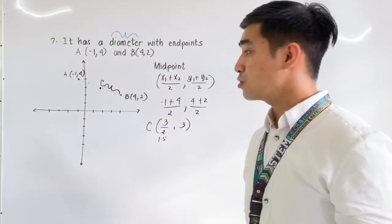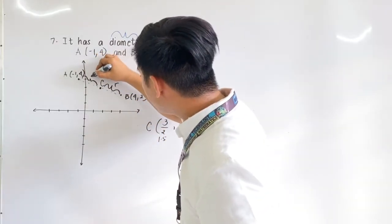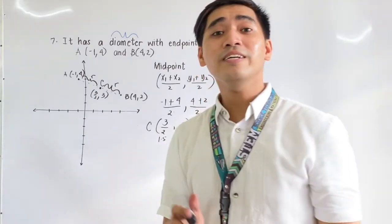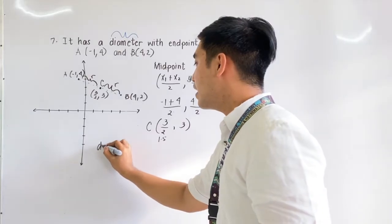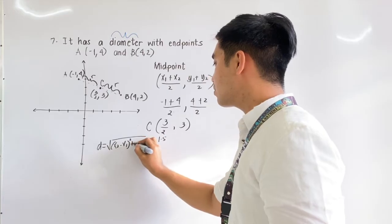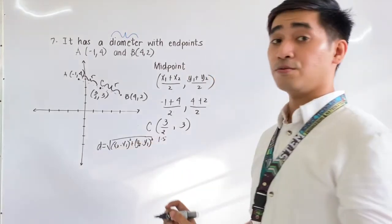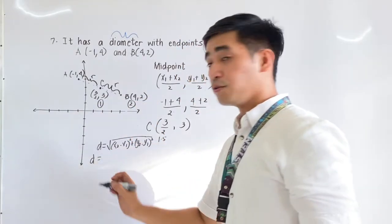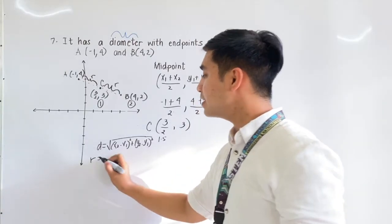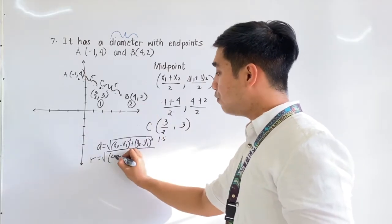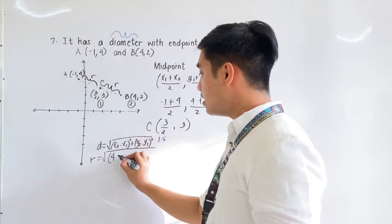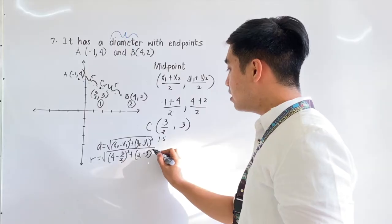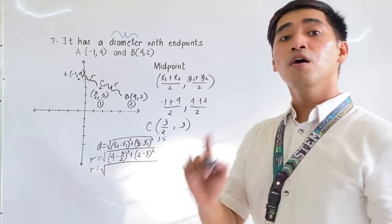How do we get the radius? The radius goes from the center — having coordinates 3 halves and 3 — to a point on the circle. We will be using the distance formula: the square root of (x2 minus x1) squared plus (y2 minus y1) squared. This is point 1 and this is point 2. Therefore the radius is equal to the square root of (4 minus 3 halves) squared plus (2 minus 3) squared.